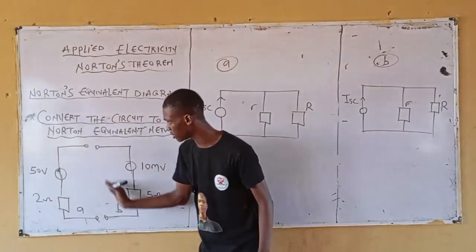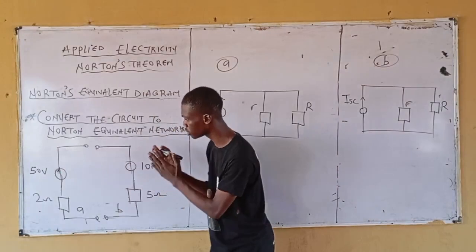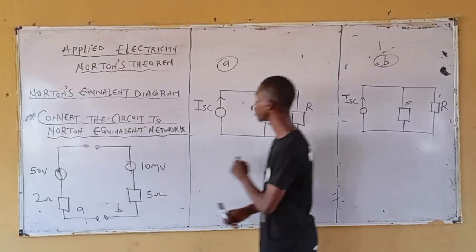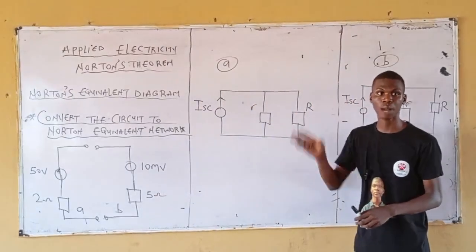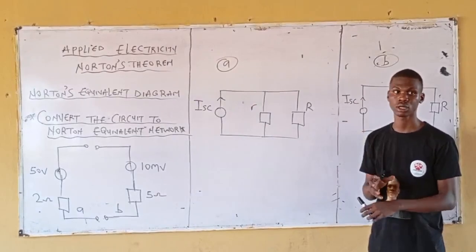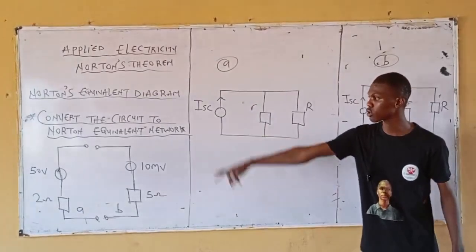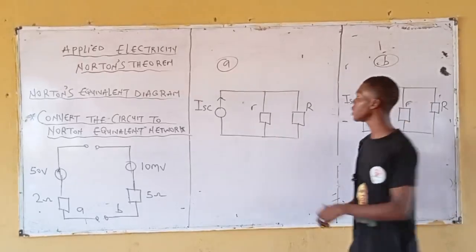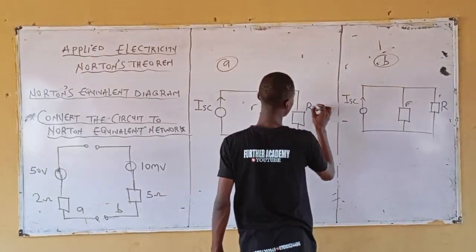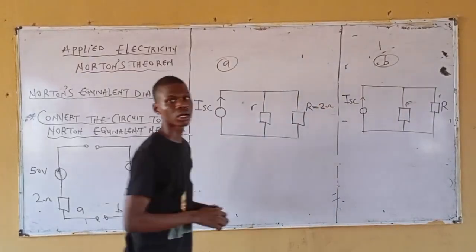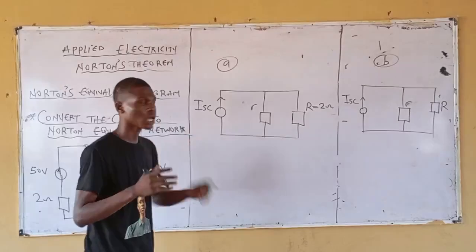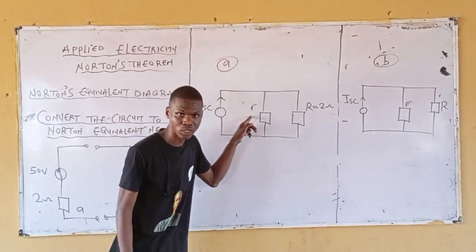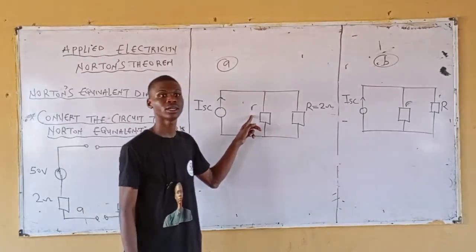Let's separate this question and solve for A first. Given the question, I'm going to identify my load resistor directly. For circuit A, my load resistor is 2 ohms. For this place, I have 2 ohm resistors. My Norton equivalent resistor for A is still 2 ohms — meaning I have 2 ohm resistors.